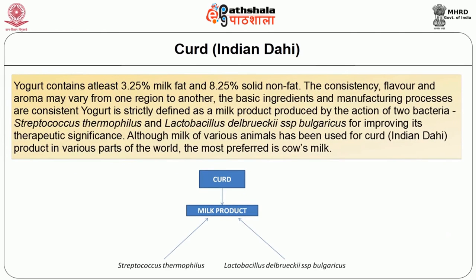Yogurt contains at least 3.25% milk fat and 8.25% solid non-fat. The consistency, flavor and aroma vary from one region to another, but the basic manufacturing process is consistent. Yogurt is strictly defined as a milk product produced by the action of two bacteria: Streptococcus thermophilus and Lactobacillus delbrueckii, for improving its therapeutic significance. Although milk of various animals has been used for curd products in various parts of the world, the most preferred is cow's milk.